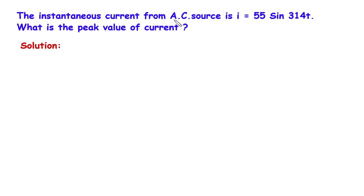The instantaneous current from AC source is i equals 55 sin 314t. What is the peak value of current? Solution: first of all we will write what is given.